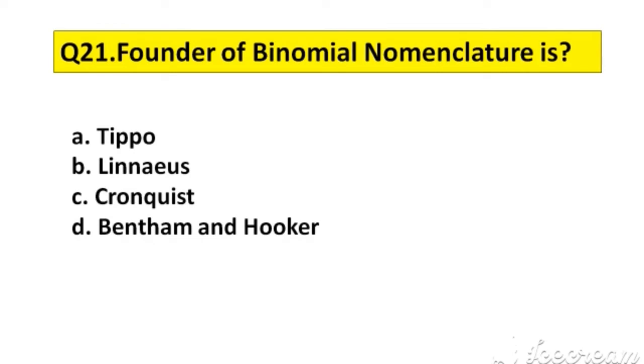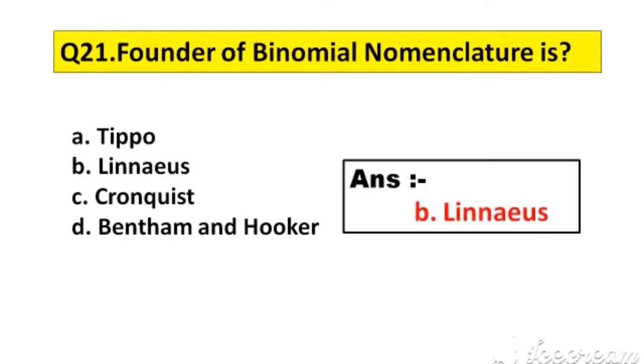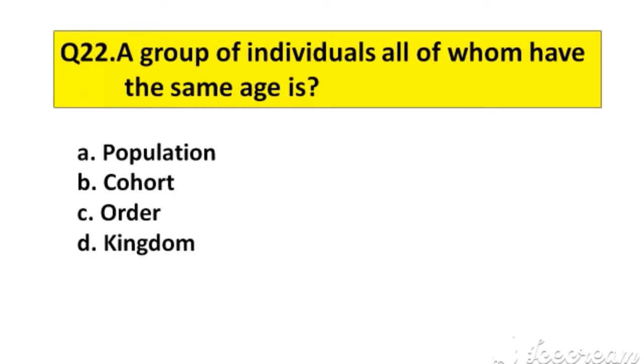Question number 21. Founder of binomial nomenclature is: A. Tipo, B. Linnaeus, C. Cronquist, D. Bentham and Hooker. The right answer is option B, Linnaeus.